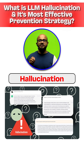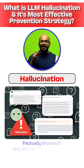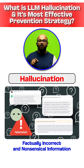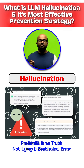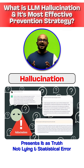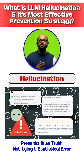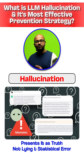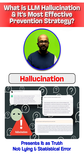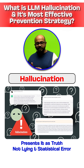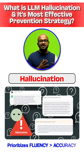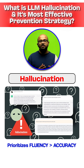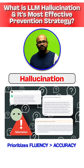Hallucination is when an LLM generates factually incorrect or nonsensical information but presents it as the truth with high confidence. It is a statistical error where the model prioritizes fluent-sounding text over factual accuracy.